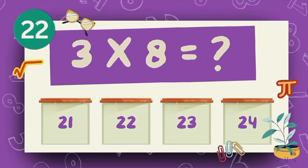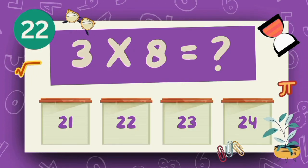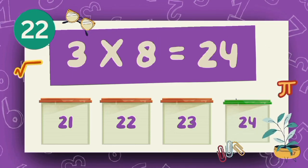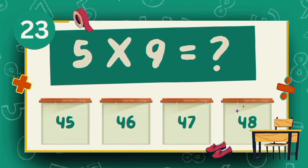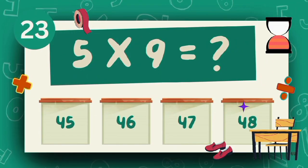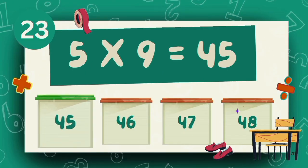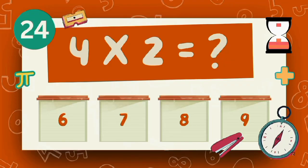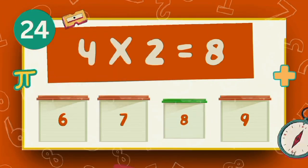What does 3 multiply 8? The answer is 24. What does 5 multiply 9? The answer is 45. What does 4 multiply 2? The answer is 8.